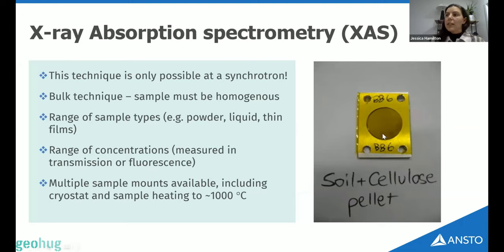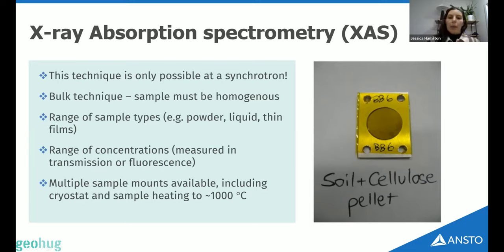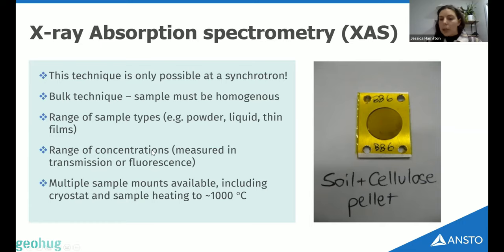We do measure bulk samples — this is an example of just a powder that's ground up and pressed into a flat pellet and analysed that way. The main requirement is that the sample should be homogeneous for this beamline, but we can do powders, liquids, slurries, thin films, all sorts of things.